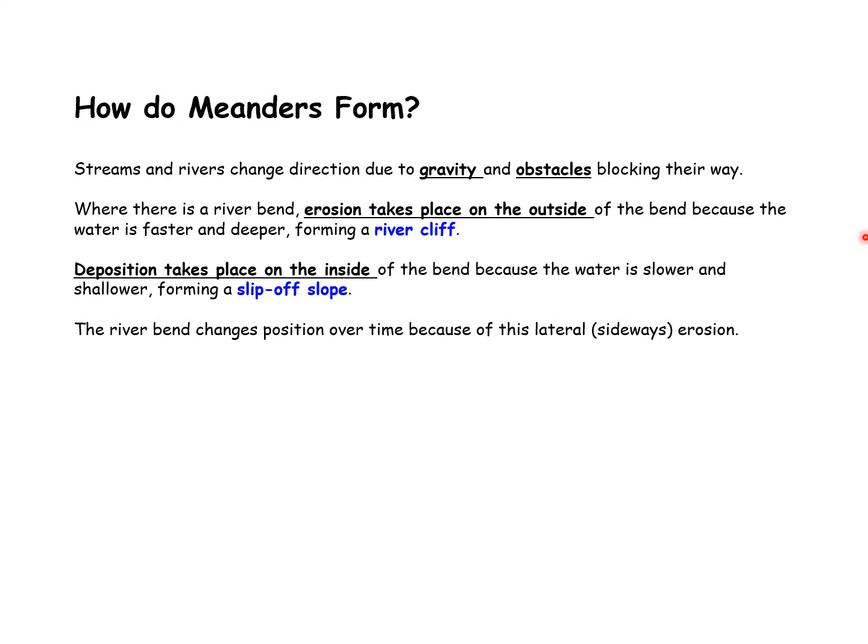If we were in an examination and they were saying what is happening at meander bends, this is the sort of thing that we would write. Rivers change direction due to gravity and obstacles. The erosion is on the outside of the bend. The deposition is on the inside of the bend. And because of that, meanders change position over time.